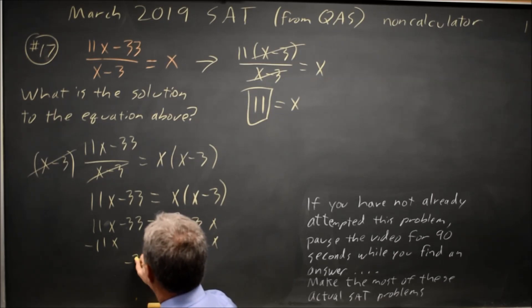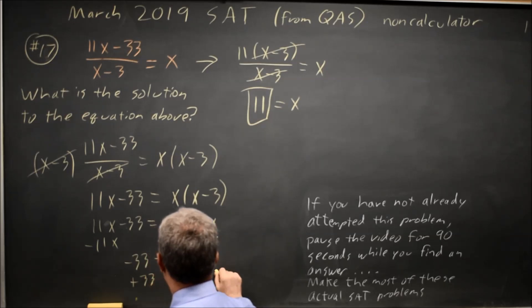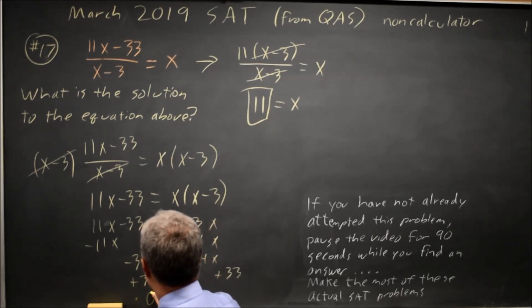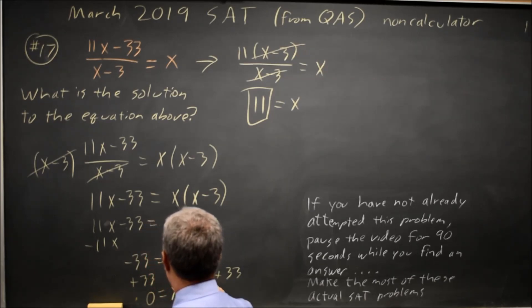and that's negative 33 equals x squared minus 14x. Let's add 33 to both sides, and that gives me 0 equals x squared minus 14x plus 33.